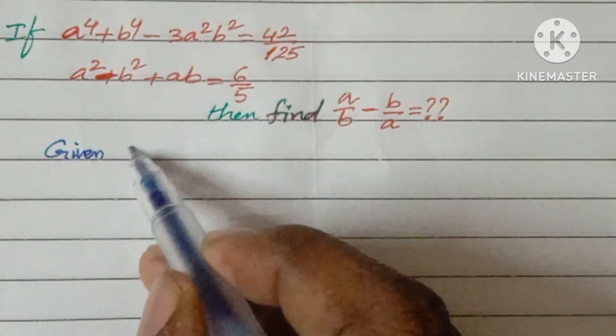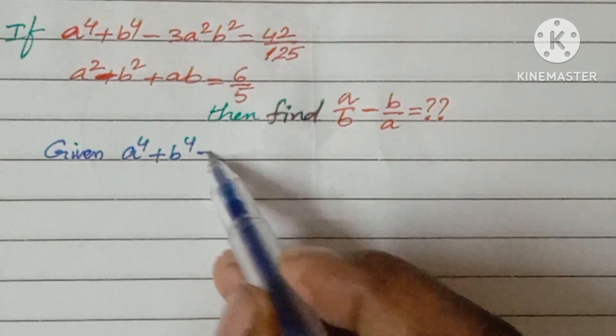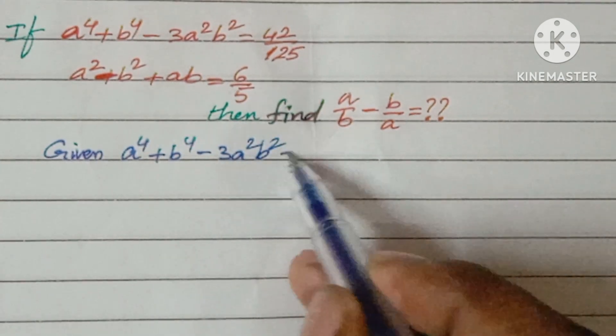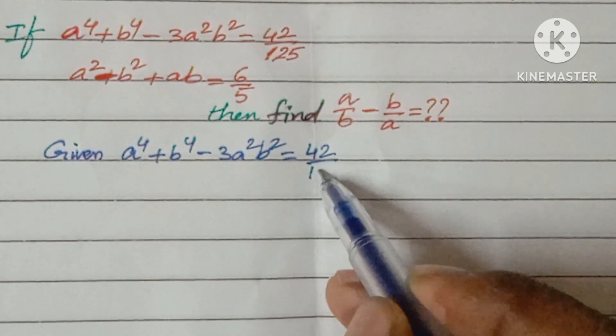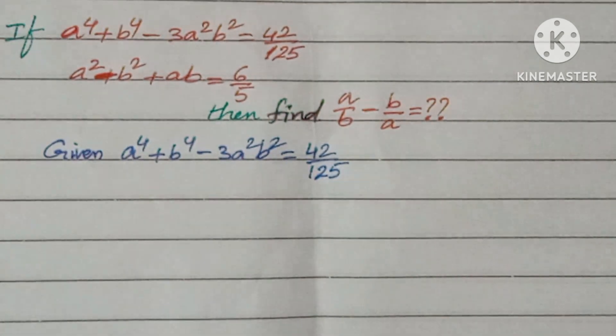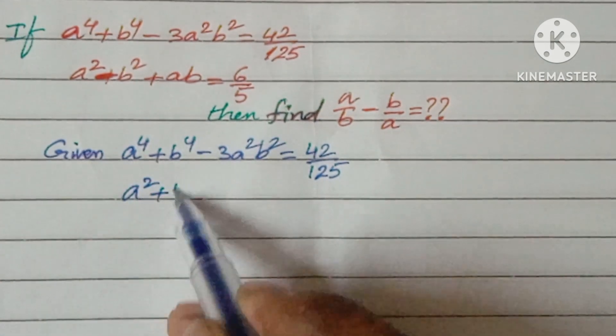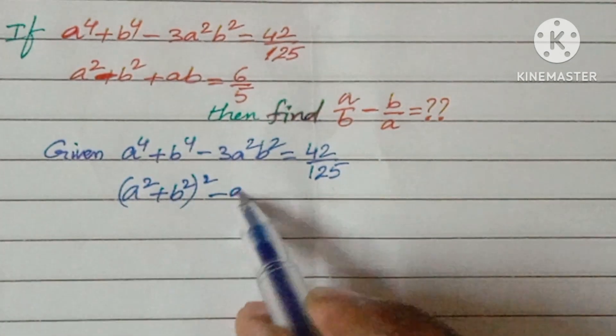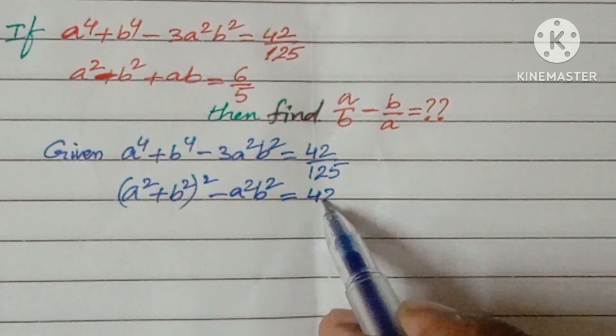Given a^4 + b^4 - 3a²b² = 42/125. So this can be written as (a² + b²)² - a²b² = 42/125.